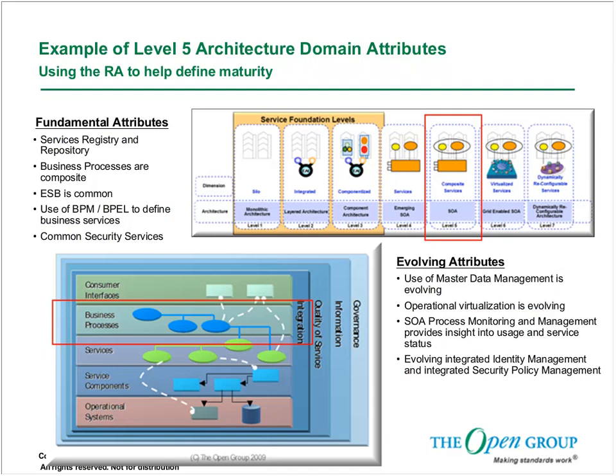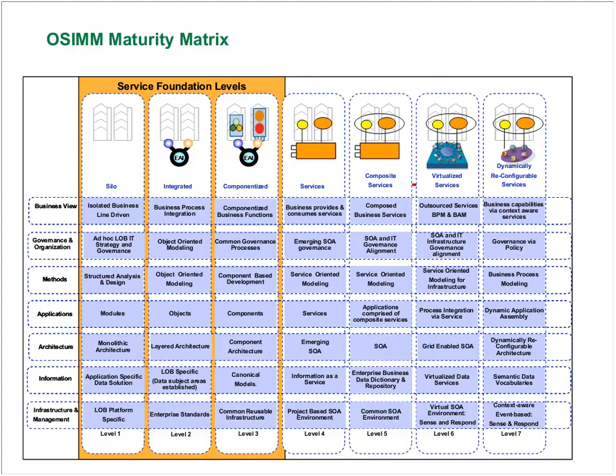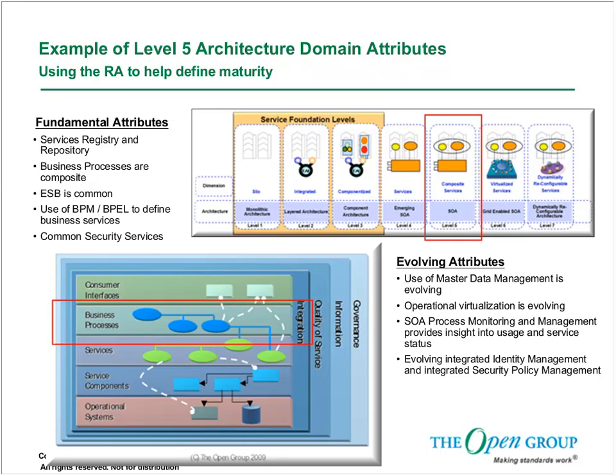To call out a domain example: at level five, which is composite services, we have a set of fundamental attributes to be considered level five maturity, and we have a set of evolving attributes. We are trying to make sure that the OSIM tracks with our future published SOARA, and we've done some tweaking over the lifespan of OSIM to ensure it tracks very well with what we're about to publish with respect to the SOARA.